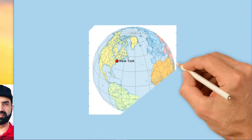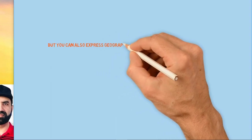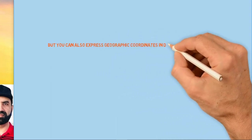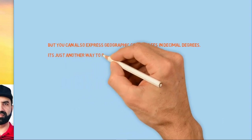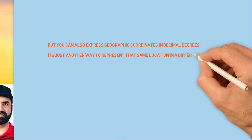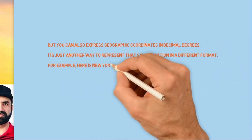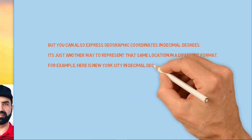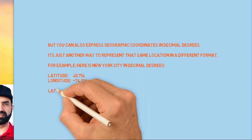But you can also express geographic coordinates in decimal degrees as well. It's just another way to present that same location in a different format. For example, here is New York City in decimal degrees with these values.